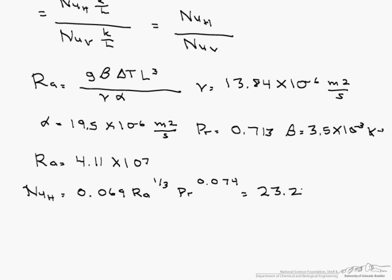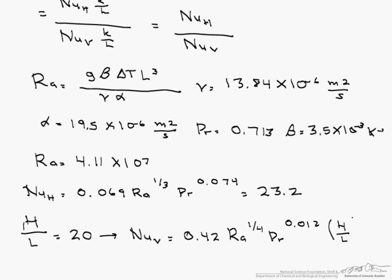In order to figure out the proper correlation for the vertical Nusselt number, we have to take a ratio of H divided by L, which is 20. Therefore, the proper correlation for our Nusselt number for the vertical enclosure is 0.42 times Ra to the 1/4 times Pr to the 0.012 times H over L to the minus 0.3.